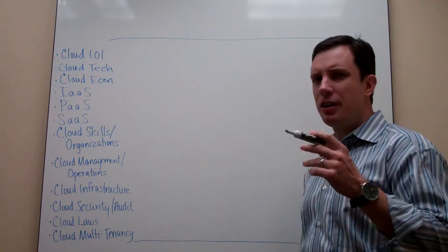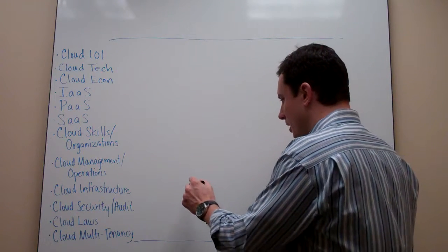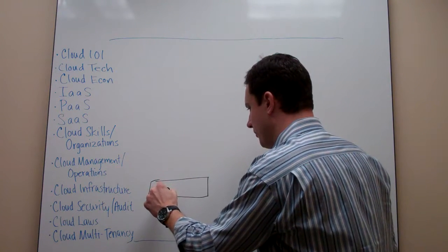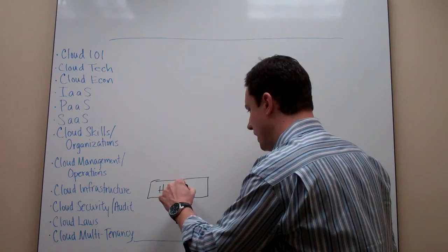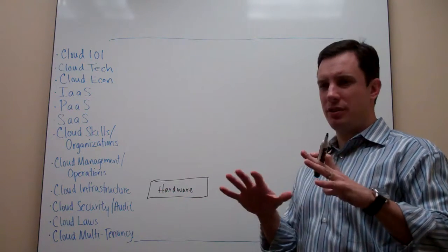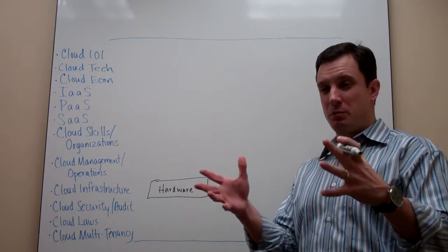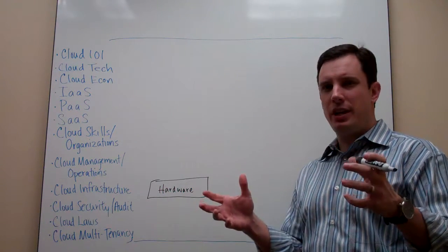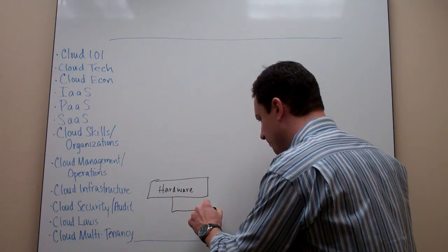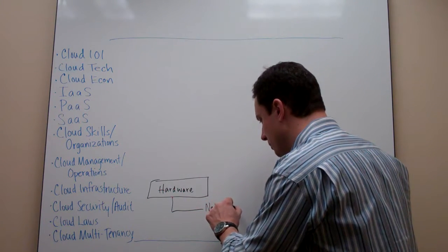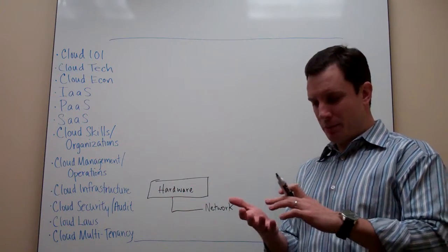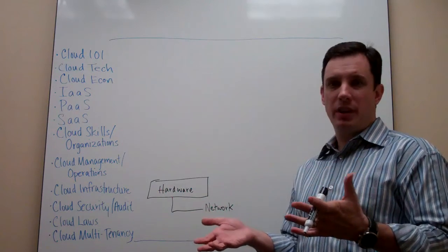So if we take any computing device, it basically looks like this. It's going to have a set of hardware, and that hardware is going to be made up of CPU and memory and BIOS and all the things within that device. It gives me a way to display, a way to process, it gives me memory, it gives me storage, and to a certain extent it gives me a network element that allows me to connect one computing device to another. That's the basis of what you have in any computer — a laptop, a smartphone, a desktop device — and that's been the case for a long time.